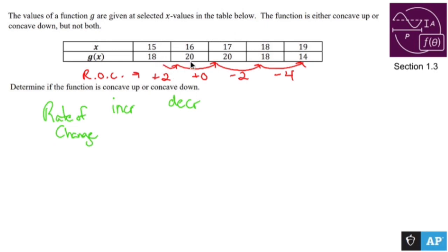And you add 2, subtract nothing, subtract 2, subtract 4. The rate of change goes from 2 to 0 to negative 2 to negative 4. Those numbers are decreasing, which means this graph is concave down.